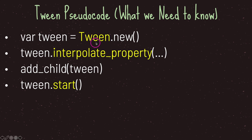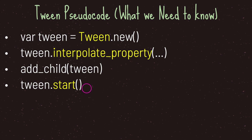After you've scratched out what you know, you'll be left with what you need to learn. Since we're using the new method, we can come to a hypothesis that tween must be a class — perhaps something Godot provides. We have a method called interpolate_property and a start method, and as a beginner who doesn't know what tween is, we're going to look at the Godot API documentation to see what exactly tween is and what these methods do.